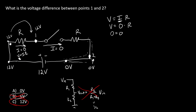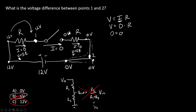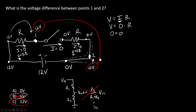So we have 12 volts here — that's obvious because of our battery. The part that students have difficulty with is that you also have 12 volts on the other side of this resistor. We can do the same thing going in the other direction: the current through the second resistor is also zero because of the open switch, and we have zero volts on that side. The voltage drop over that resistor is zero because the current is zero, so we also have zero volts there. We wanted to know the difference between points one and two — point one is at 12 volts and point two is at zero volts. So the voltage difference between points one and two is 12 volts.